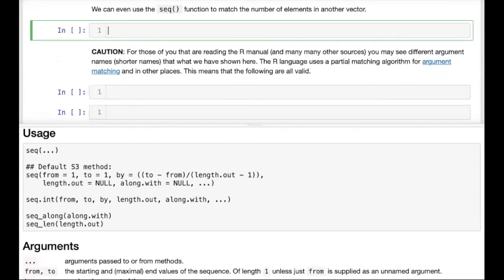Now we skipped the along.width argument a moment ago. What this argument allows us to do is to generate a sequence with the same number of elements as another vector. This is equivalent to setting the length argument to the length of another vector, but it does so much more concisely.